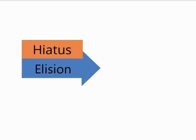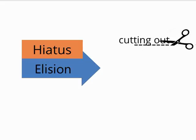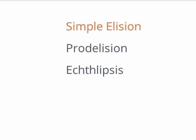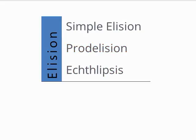Elision was the main tool in Latin for eliminating hiatus. Just as its original definition of cutting out or squeezing out suggests, elision is the omission or cutting out of one of the two vowel sounds. There are three types of elision, each of which has its own special name, but they are all generally referred to as elision.